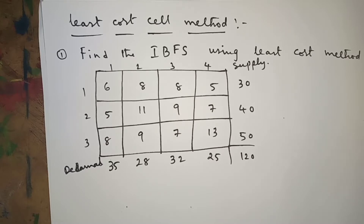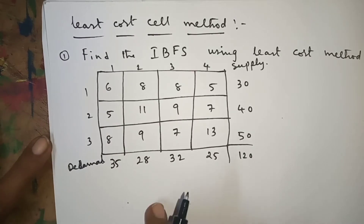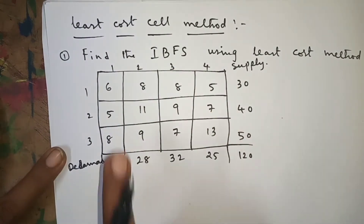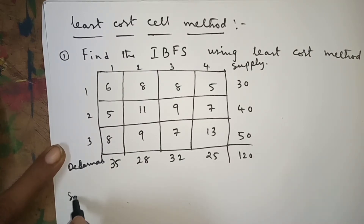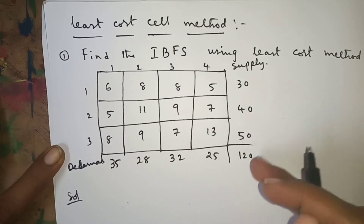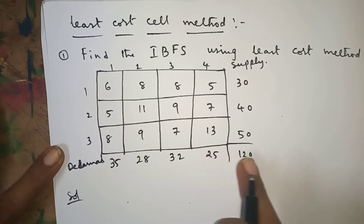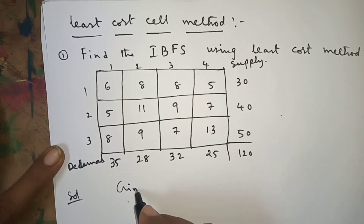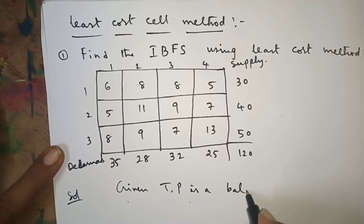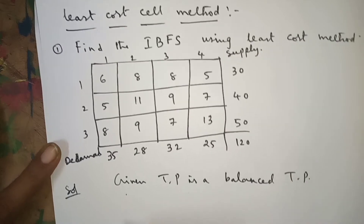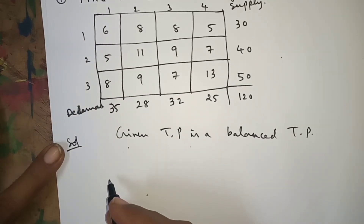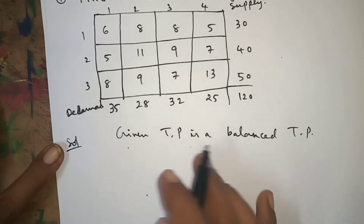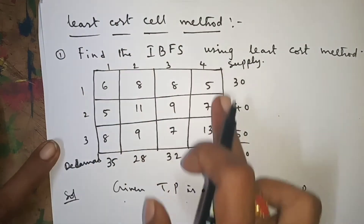Hello everyone. Today I am going to explain how to find the IBFS using the Least Cost Cell Method. In the given problem, the sum of supplies is equal to the sum of demands, both equal to 120. If you add all the demands you get 120, therefore the given Transportation Problem is a balanced TP. Now I'll start the Least Cost Cell Method.